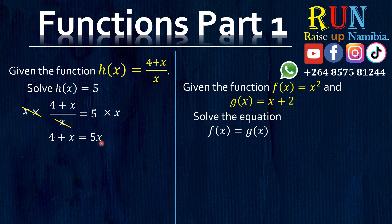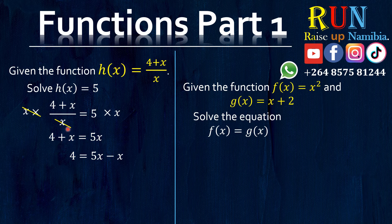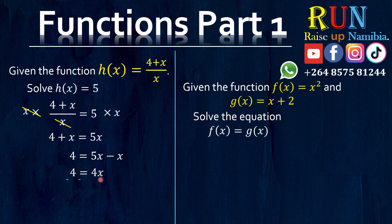So we get: 4 plus X equals to 5X. From here it's again a simple linear equation. Take the positive X to the right-hand side — it becomes negative X. The 4 just comes down. So you have 4 equals to 5X minus X, which gives us 4X. Now we want X alone, so we divide both sides by 4. That cancels out on the right-hand side, and we are left with X equals 4 divided by 4, which is 1. And that's our final answer.